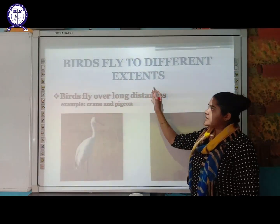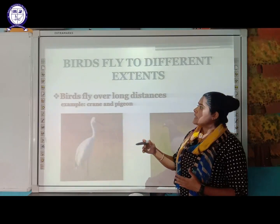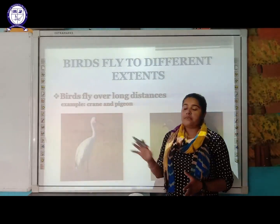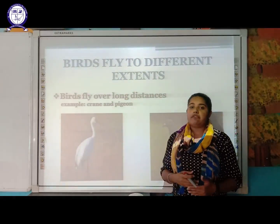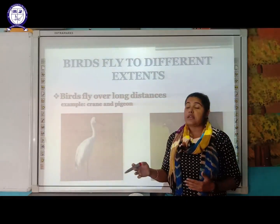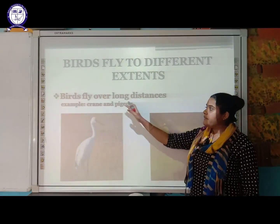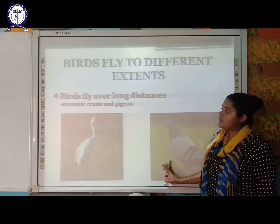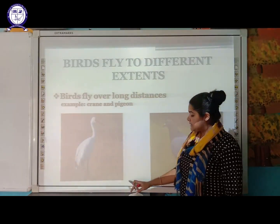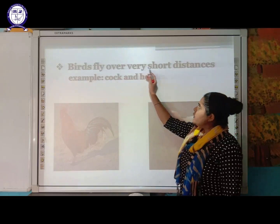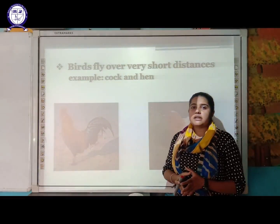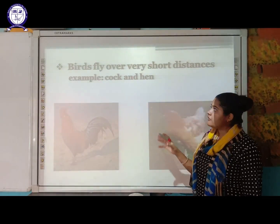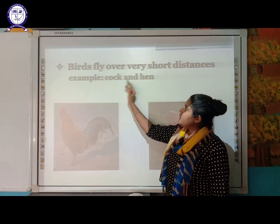Birds fly to different extents. Some birds fly over a long distance, traveling from one place to another continuously. Examples are crane and pigeon. Other birds fly over a very short distance, covering only small distances — examples are cock and hen.